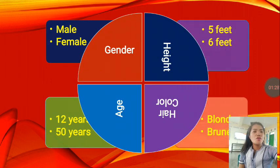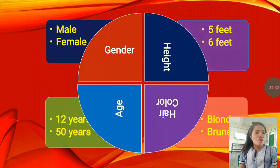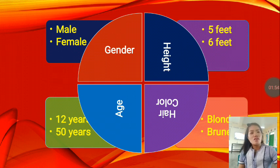Then you also have the height. Example of a height, you have five feet and six feet, or we could also have five feet and two inches. Then we also have the age. For the age, you have 12 years, 50 years, and many more like about your age.